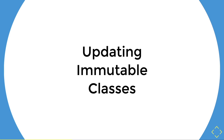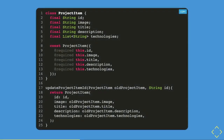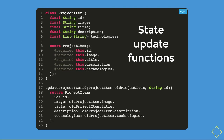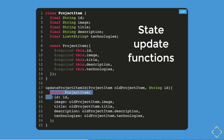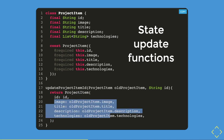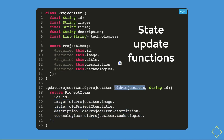Now let's try to update this immutable class. One way you might try is to create a separate function outside of the class — this is called a state update function. We have a simple function called update project item; it takes two arguments: the old project item of type project item data, and a string ID. This function helps us update the ID and returns a new instance of a project item with the new ID, with the rest of the properties extracted from the whole project item passed in.